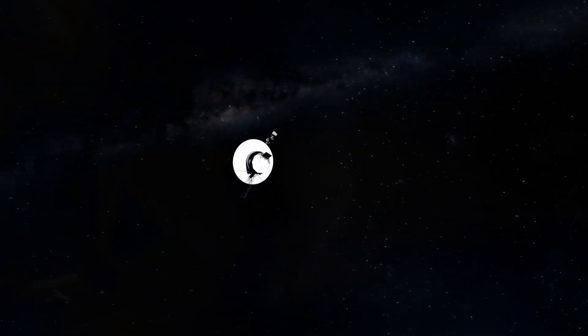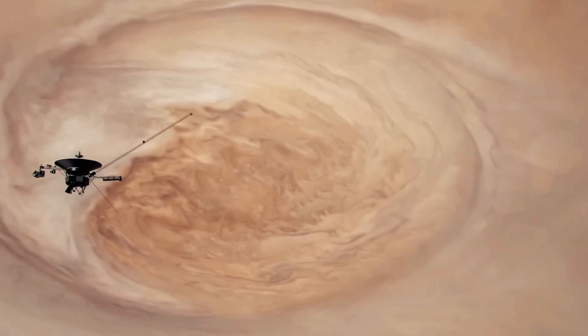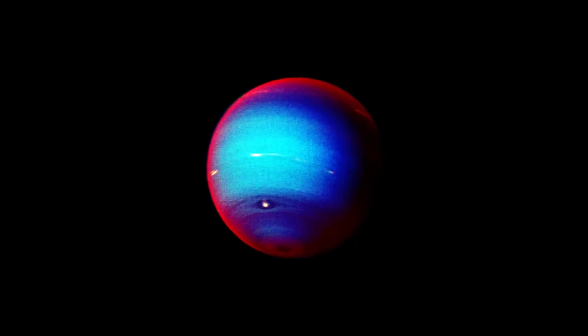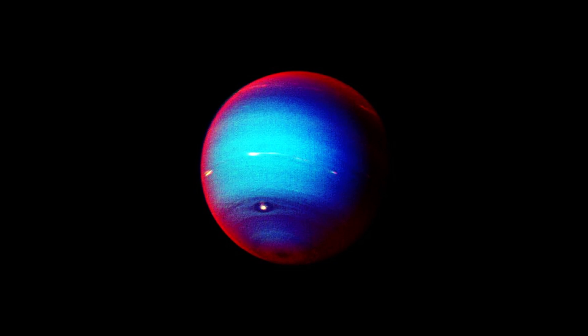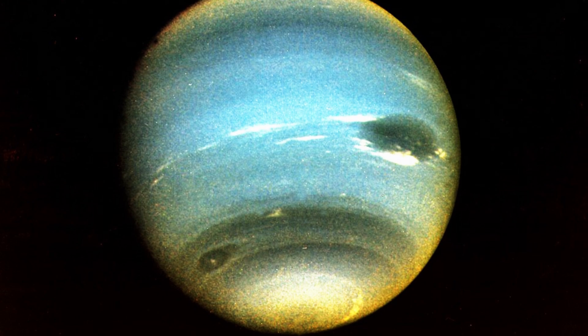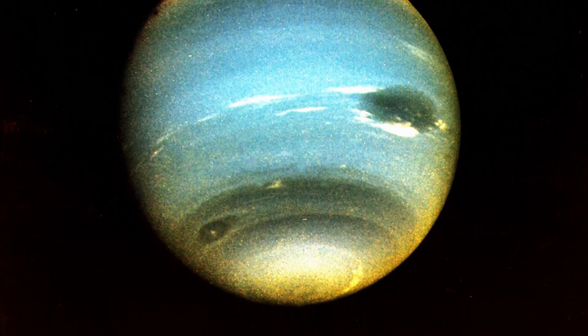Voyager 2's final stop was Neptune, the most distant planet, which it reached in August 1989. To this day, it remains the only spacecraft to have visited Neptune. On August 25, 1989, it captured the first-ever detailed images of the planet, completing its grand tour. Neptune appeared strikingly blue, though later analysis revealed its true color was closer to teal.